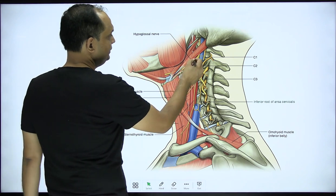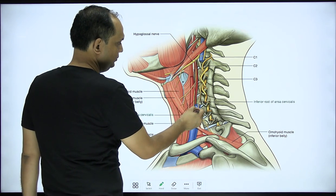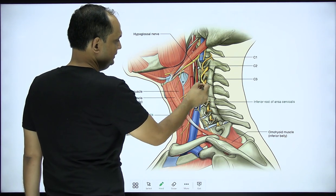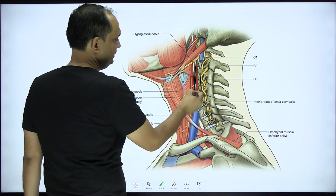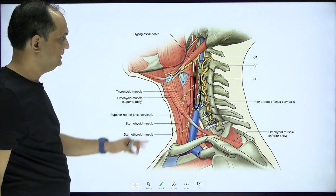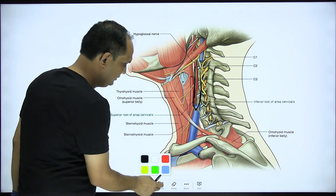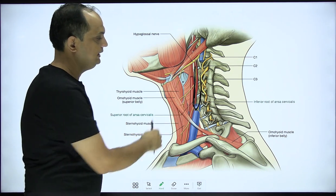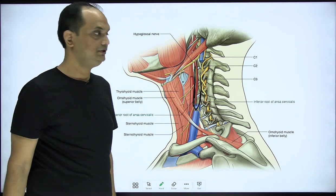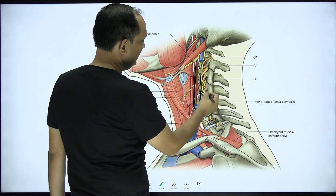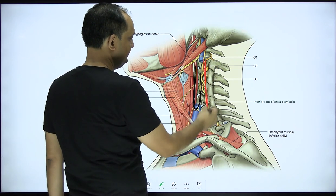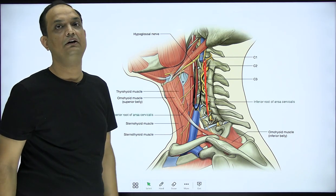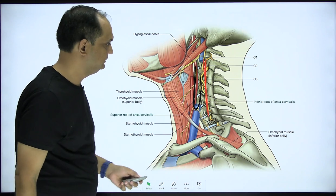In this diagram you can see the ansa cervicalis loop lying anterior to the artery and vein — that means it is on the anterior wall of the carotid sheath. On the posterior side you have the presence of sympathetic ganglia; the posterior part contains the cervical part of the sympathetic chain.